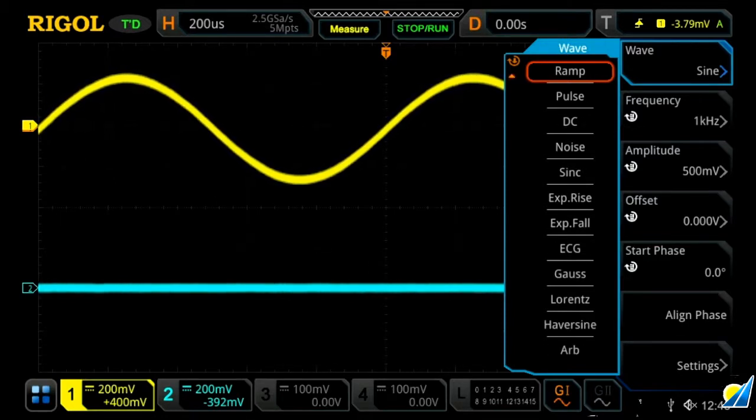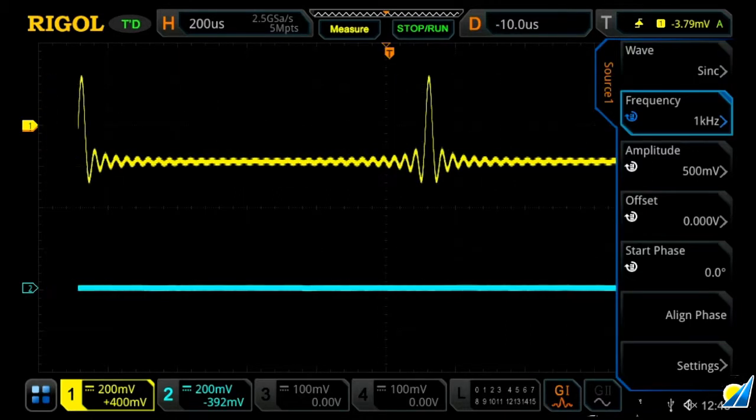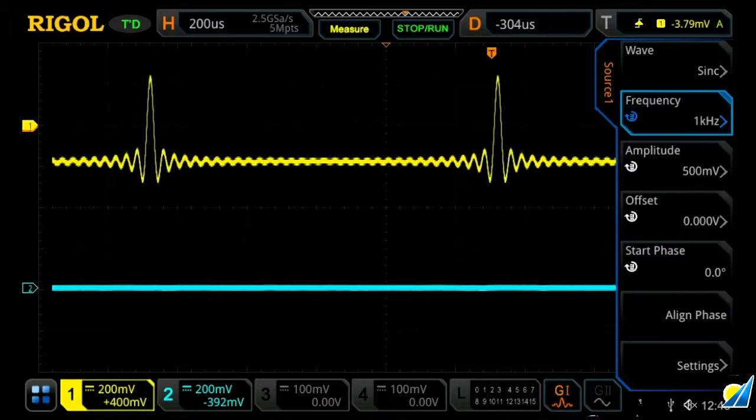Let's select our sync function here and we'll now see a sync function on our oscilloscope. Let's move this so we can see two points.